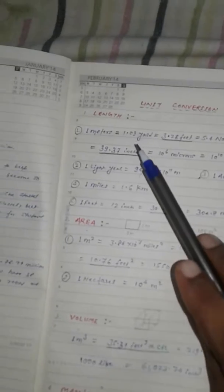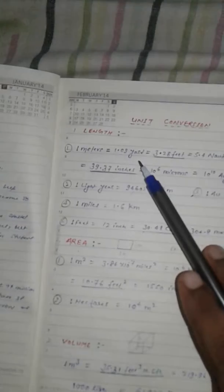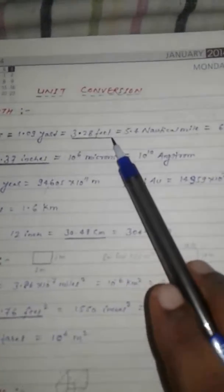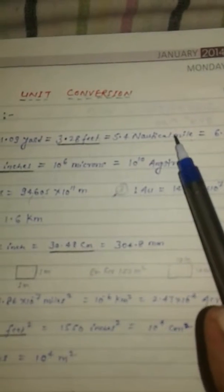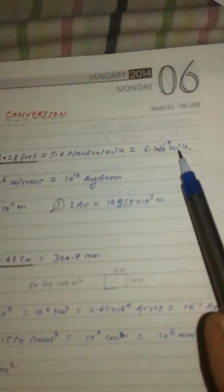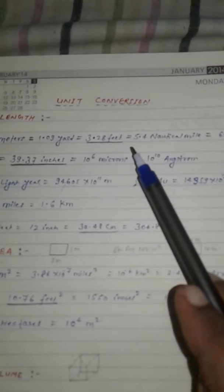Length: One meter is equal to 1.09 yard, 3.28 feet, 5.4 nautical miles, 6.2 x 10 to the power minus 4 miles, 39.37 inches, 10 to the power 6 microns, and 10 to the power 10 angstroms.